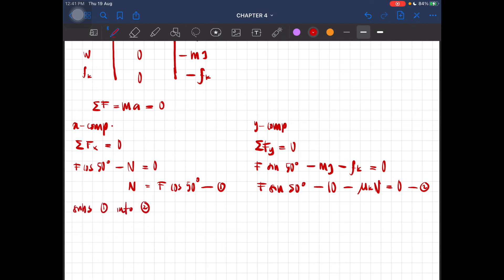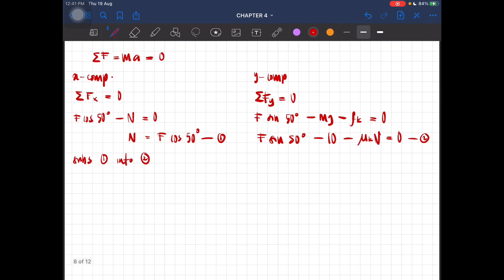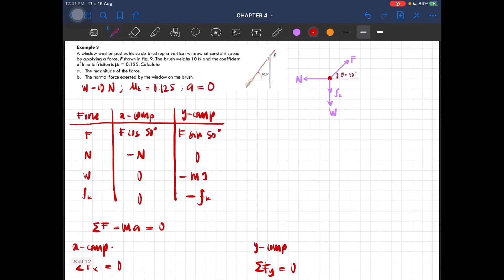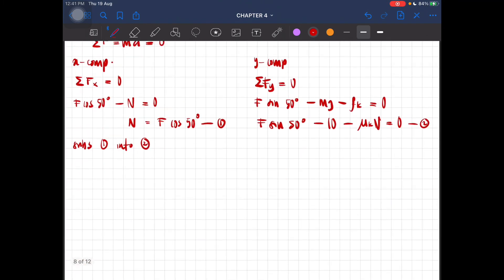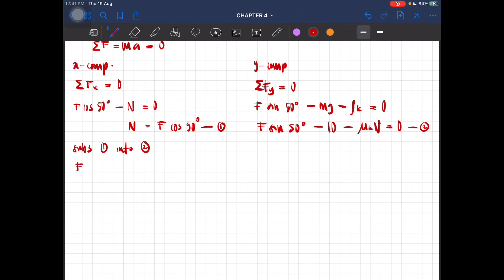Now we can substitute one into two. So we have F sin 50 degrees minus 10 minus mu k, which is given, N is F cos 50 degrees, equal to zero. So you substitute the values and you'll then get F equal to 14.6 newtons.